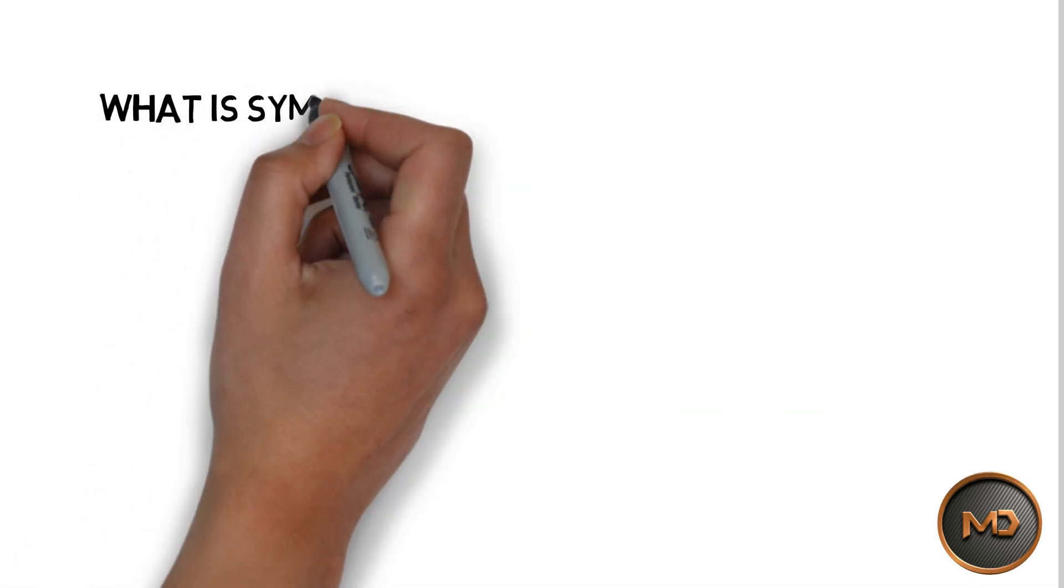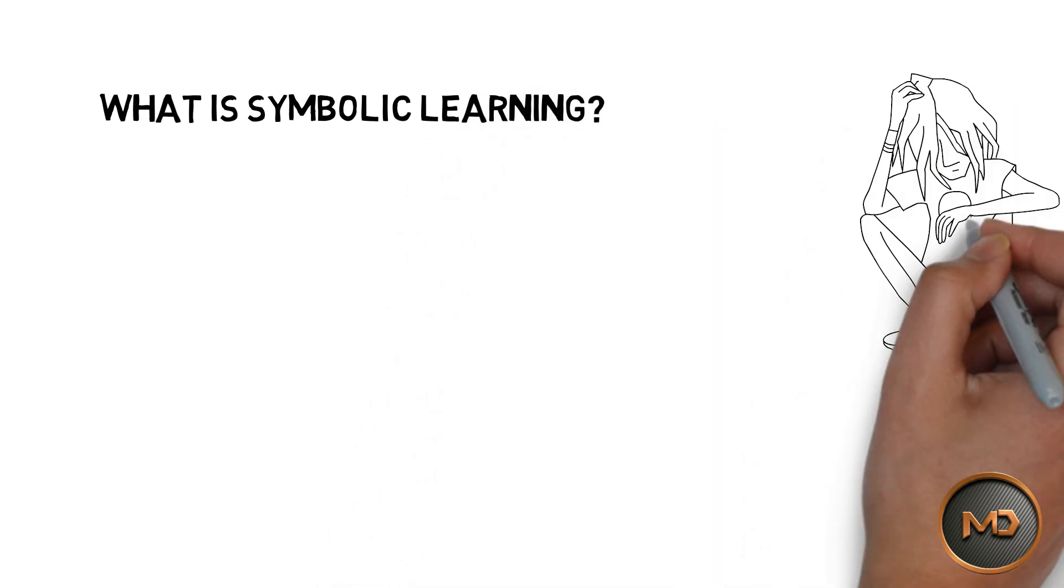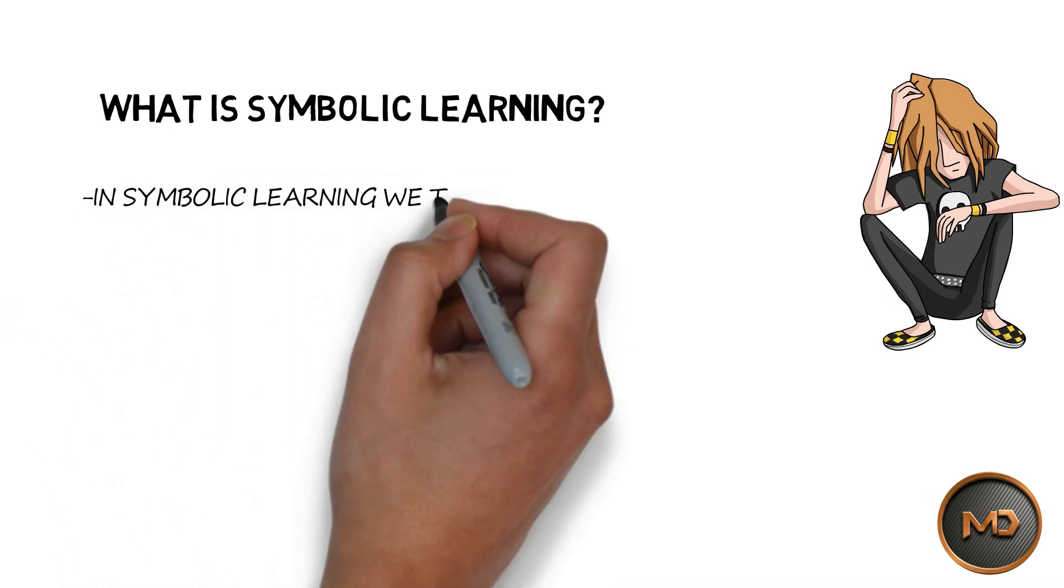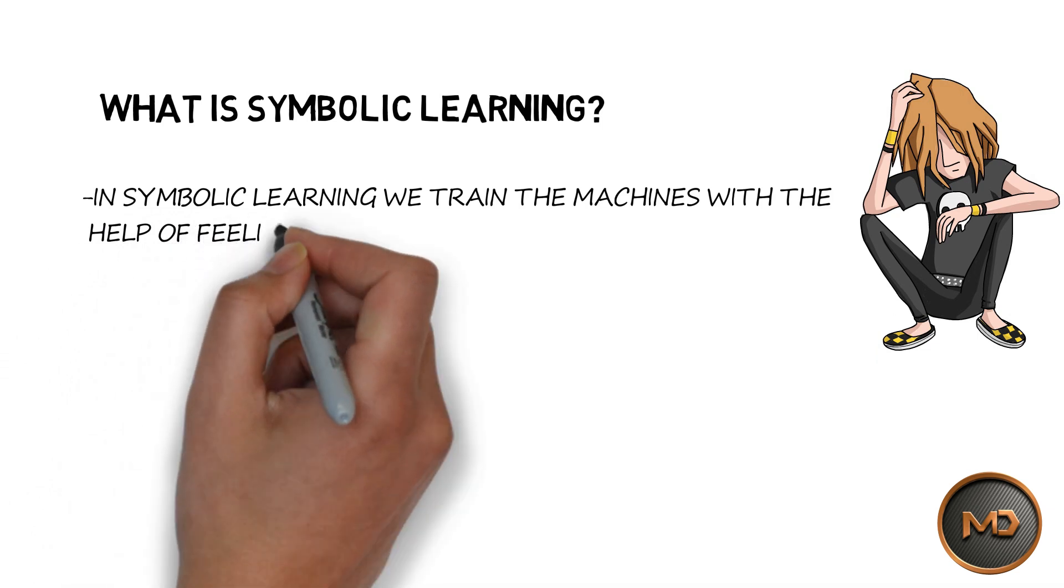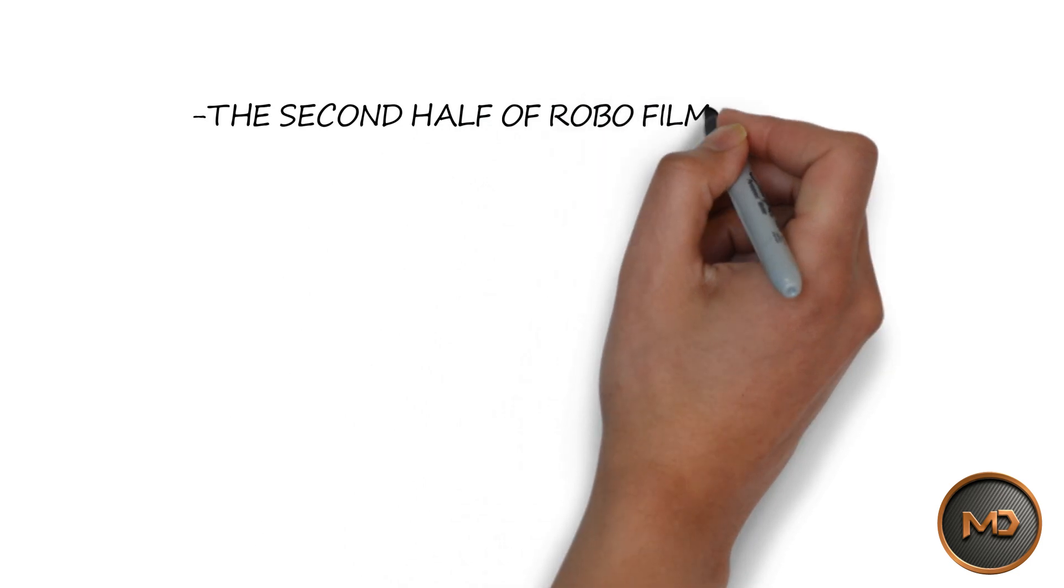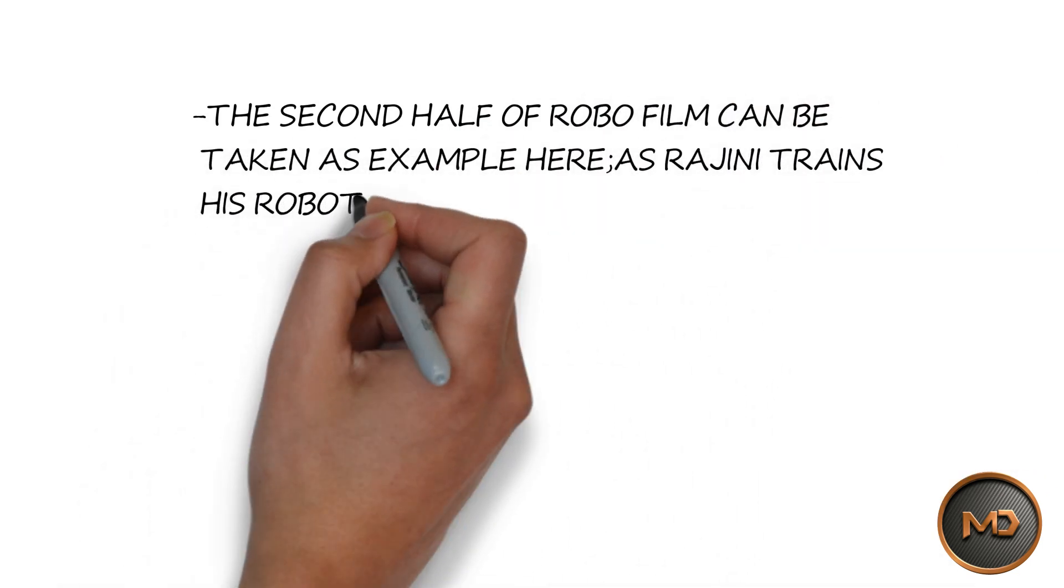What is symbolic learning? Well don't worry, I am sure that 90% of you haven't even heard the term symbolic learning. In symbolic learning we train the machines with the help of feelings and emotions. The second half of the robot film can be taken as example here as Rajni trains his robot with the help of feelings and emotions.